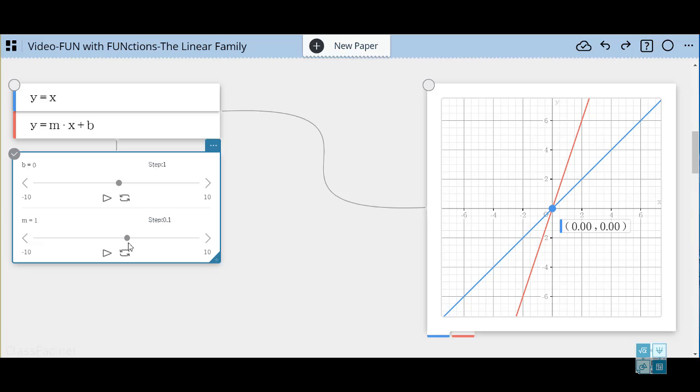Now if we make M a positive fraction like 0.5, we now have a line that is less steep than the parent function. So the value of M, if it is positive, will reflect the steepness of our line and it will always be in an uphill direction.